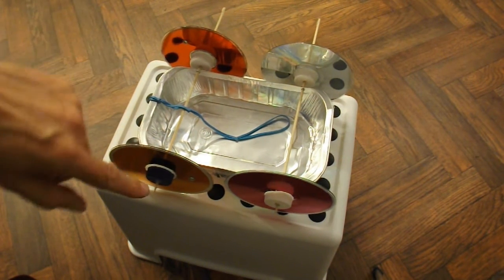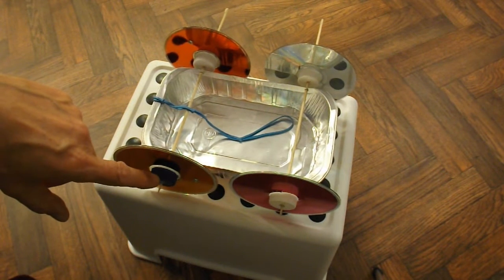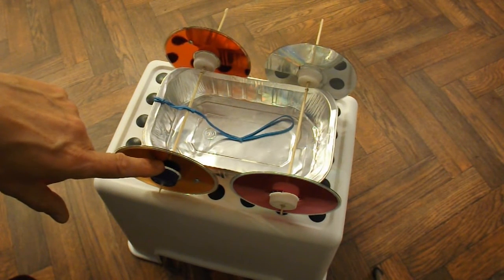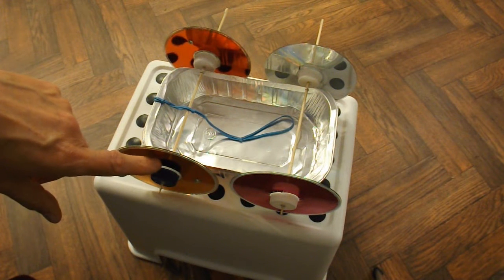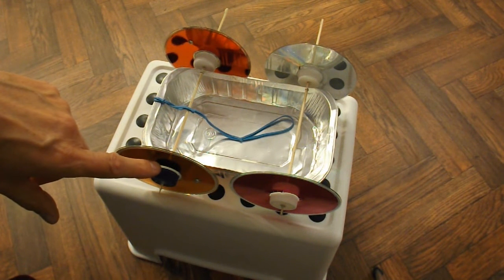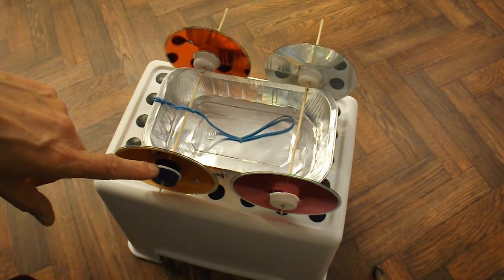You need a hot glue gun to glue the bottle tops to the CDs or a suitable sort of glue that you can get hold of. I use hot glue gun because it's very quick and easy.